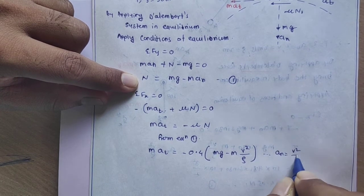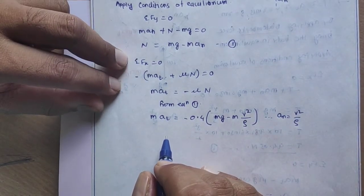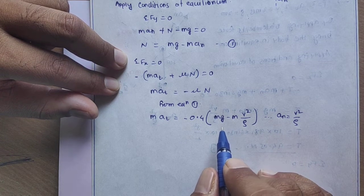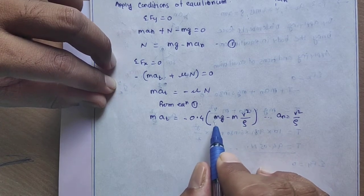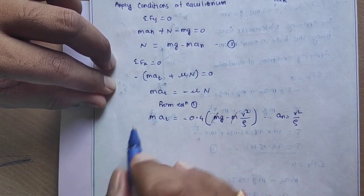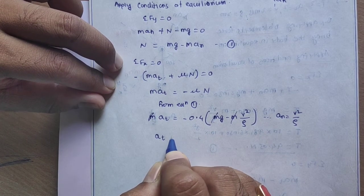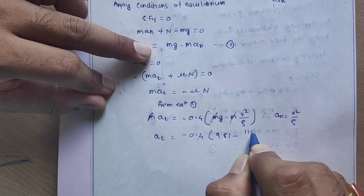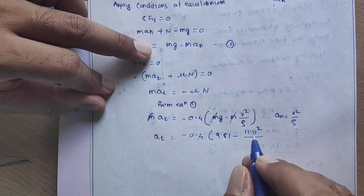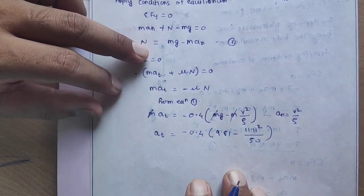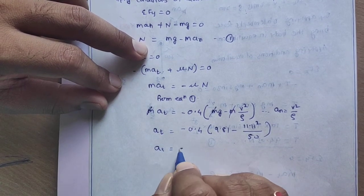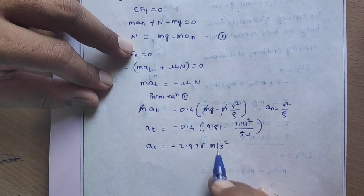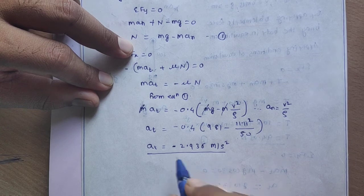Now we put in the values. M is a common term that gets cancelled. The remaining equation is: AT = −0.4 × (9.81 − (11.11)² / 50). Calculating this gives a deceleration of AT = −2.936 meter per second squared. So this is the tangential acceleration when the brakes are applied. This is our answer.